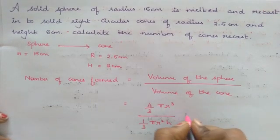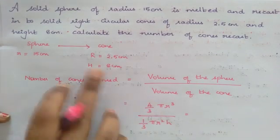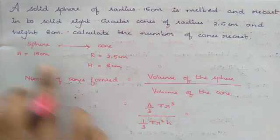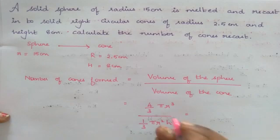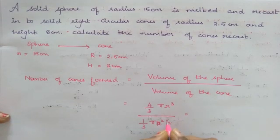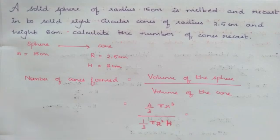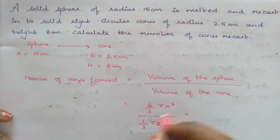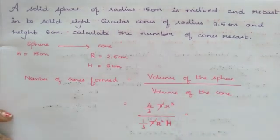Now we are actually differentiating so that it is easy for us to understand. For a sphere it is r, and for a cone it is going to be capital R and capital H. So now I hope you people are able to understand why we are differentiating the symbols.